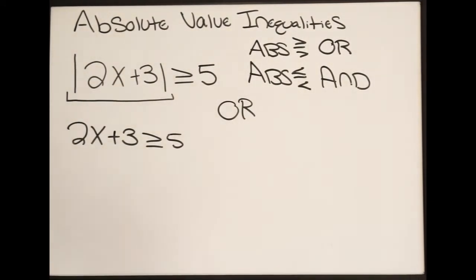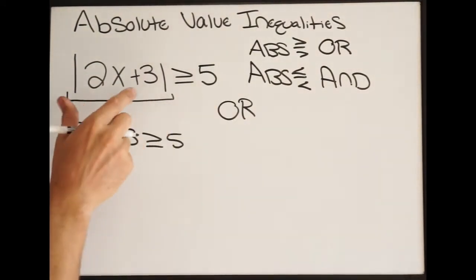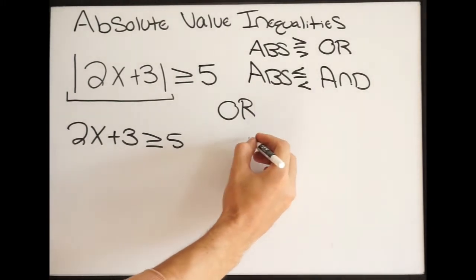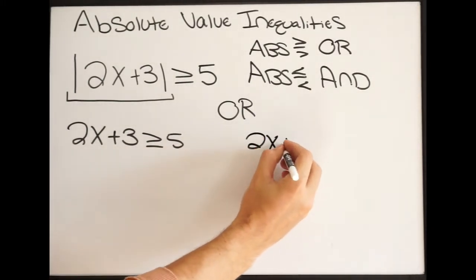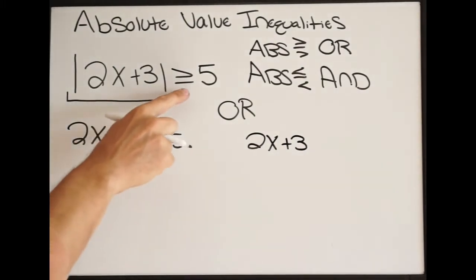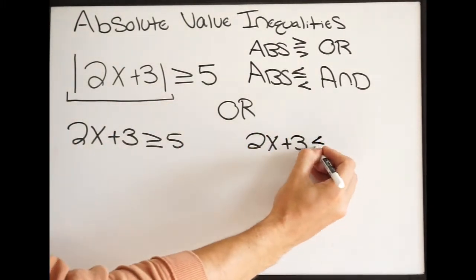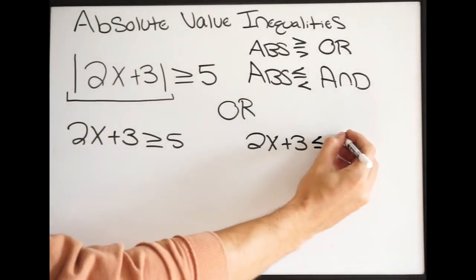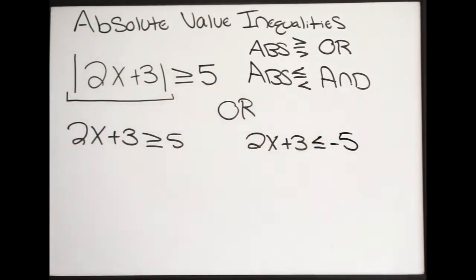Now you're going to write a second inequality. Write exactly what you see inside the absolute value bars — 2x plus 3 — and at this point all you're going to do is flip the inequality and then change the sign, which is going to be negative 5 now. You're going to solve both of these inequalities and that's going to give us our answer, and then we can go ahead and graph it on the number line.